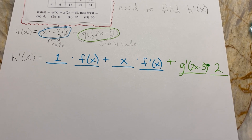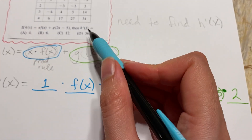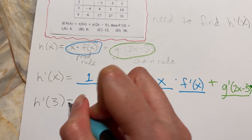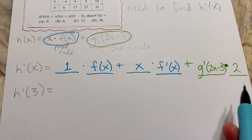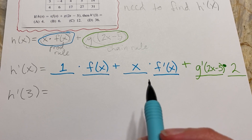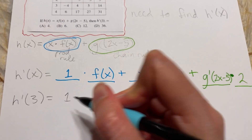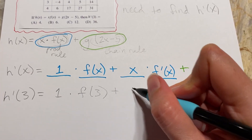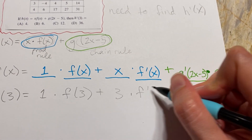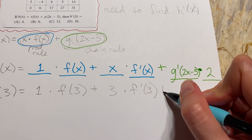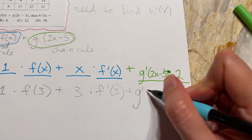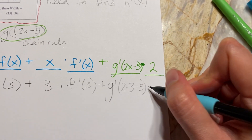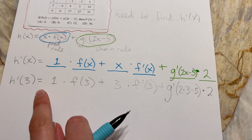So there's the formula for h'(x). Now since they want h'(3), we go right below it: h'(3) is the h'(x) formula with every x replaced by 3. So it'll be 1·f(3) + 3·f'(3) + g'(2·3 - 5) all times 2.